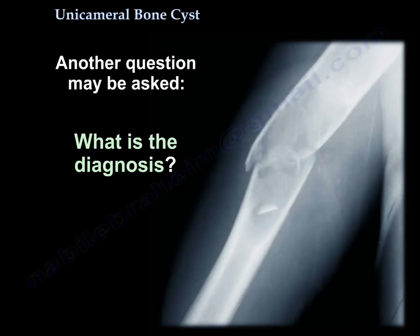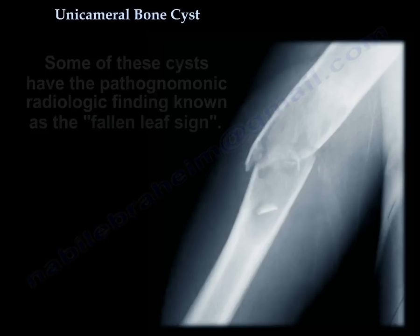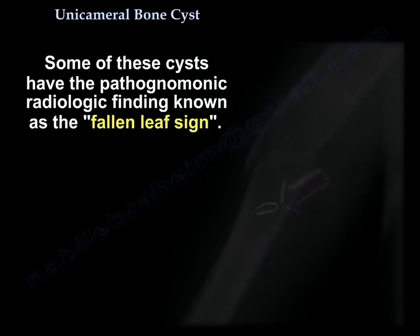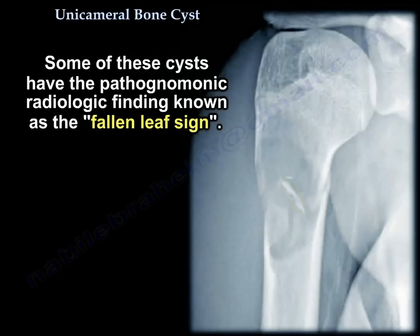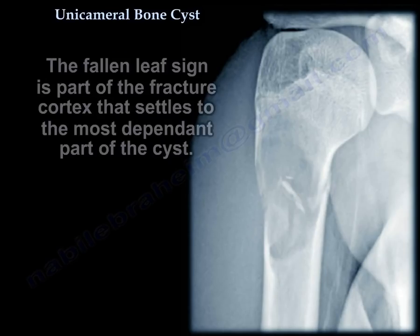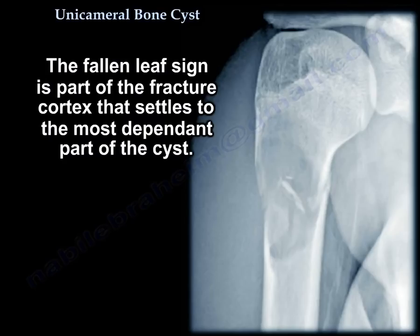For another exam question: what is the diagnosis? Some of these cysts have a pathognomonic radiologic finding known as the fallen leaf sign, which is typical for unicameral bone cyst. The fallen leaf sign is the part of the fractured cortex that settles to the most dependent part of the cyst.